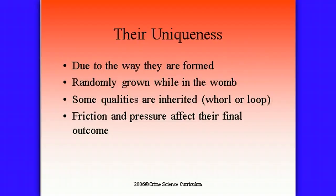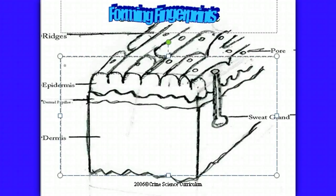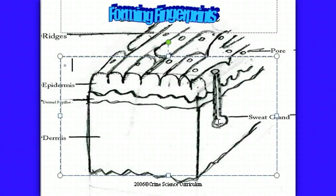Let's take a look at this diagram. You can see that the ridges are formed on the surface of the skin. I want you to note here are the pores on the surface of the skin, and at the base of each pore is a sweat gland. Remember that the fingerprint is a physical impression that's left behind — it's those oils and secretions from the sweat glands that leave that impression of the fingerprint ridges itself, and that's how we're able to collect it.